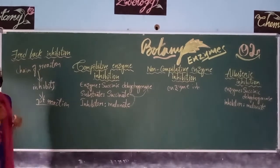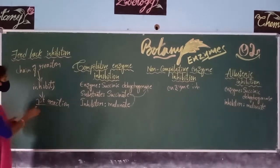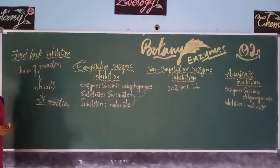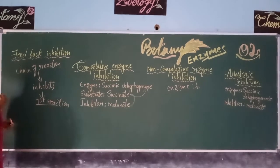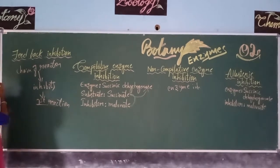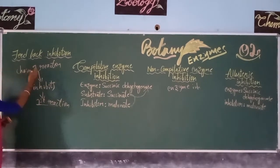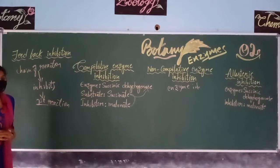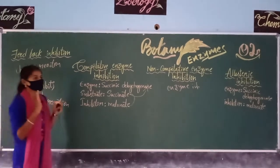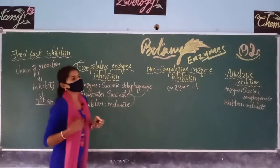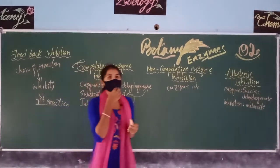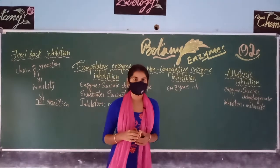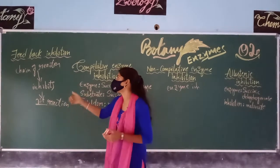Among this chain of reactions, if any one reaction is inhibiting the first reaction of the enzyme, then such a mechanism is called feedback inhibition. Inhibition means stopping or inhibiting the activity of the enzyme — that is the process of feedback inhibition.